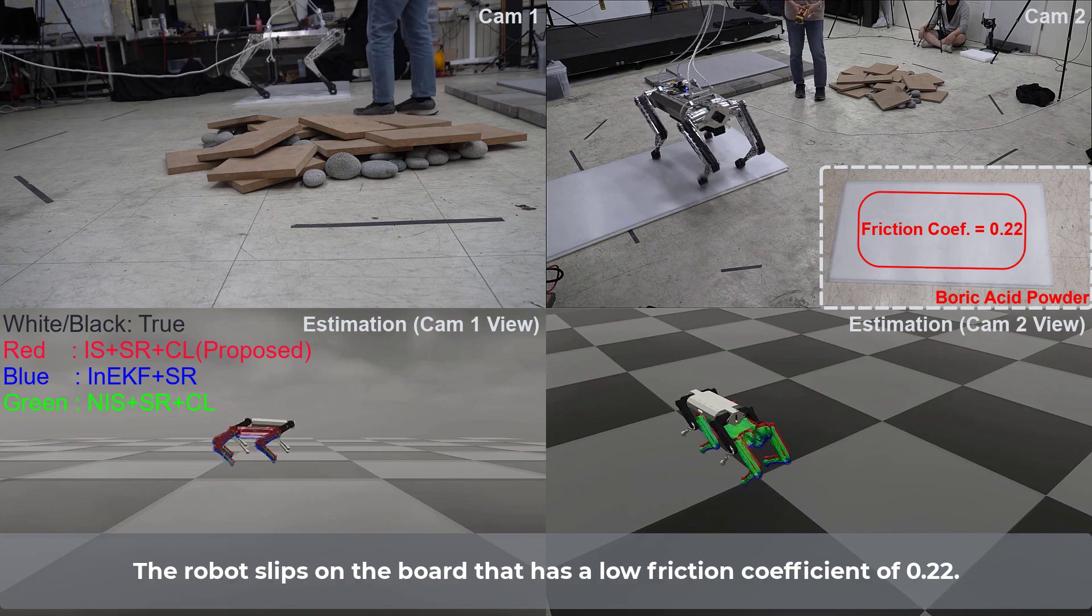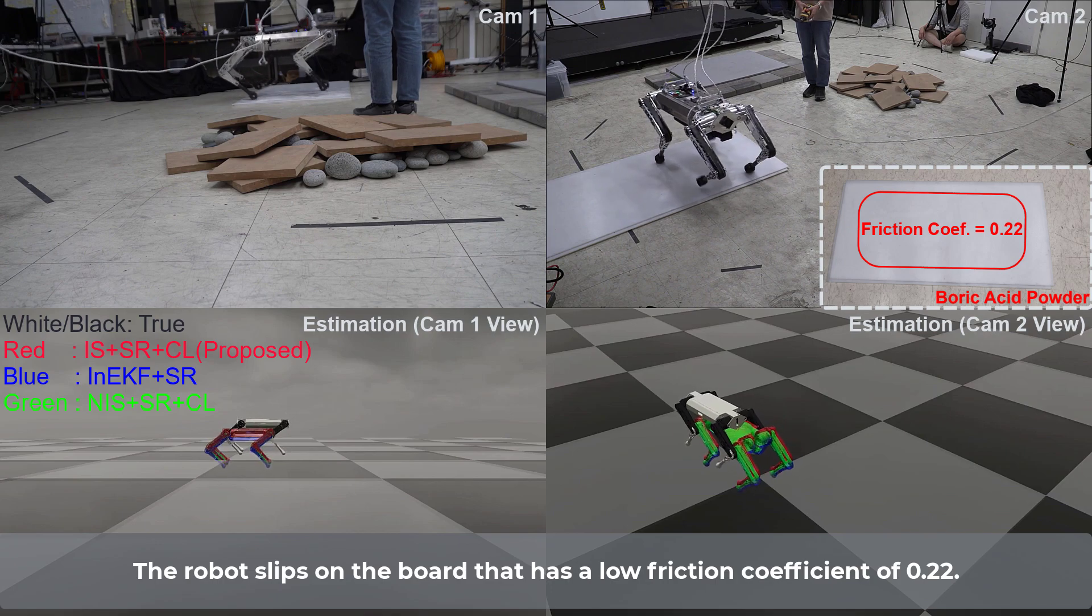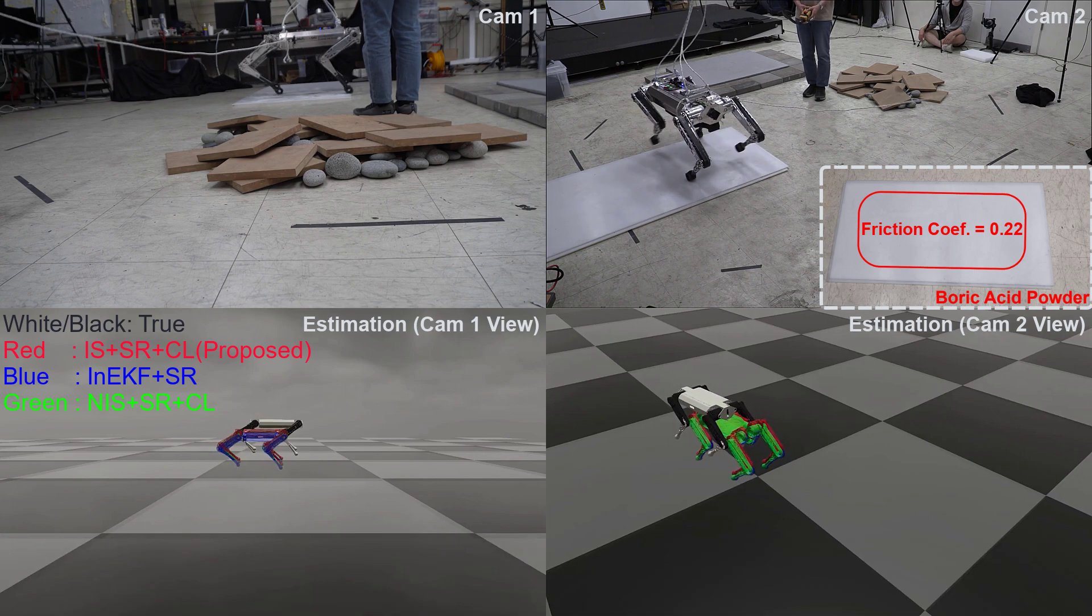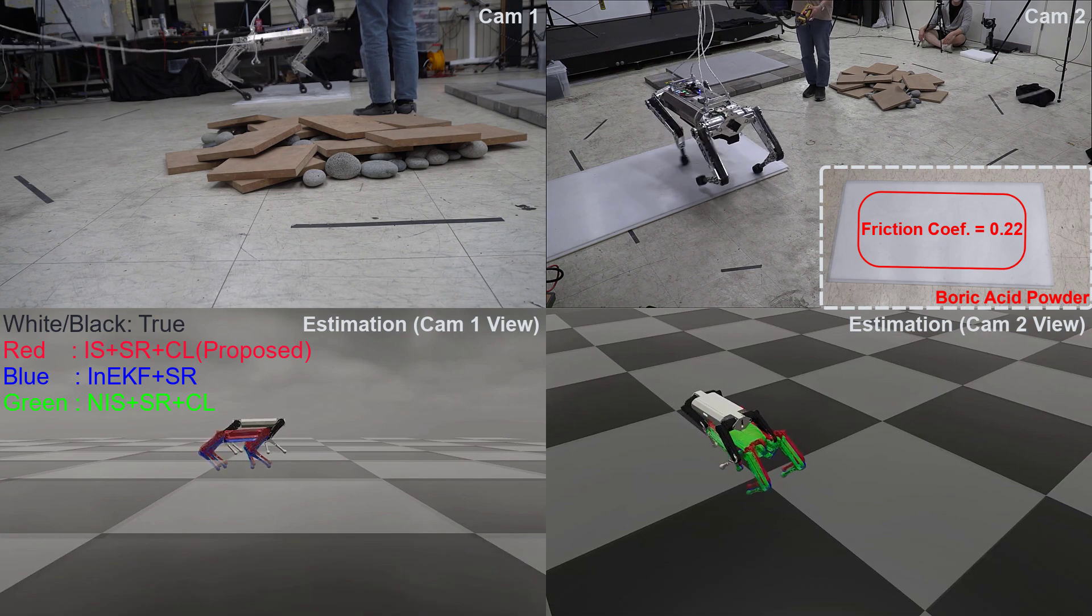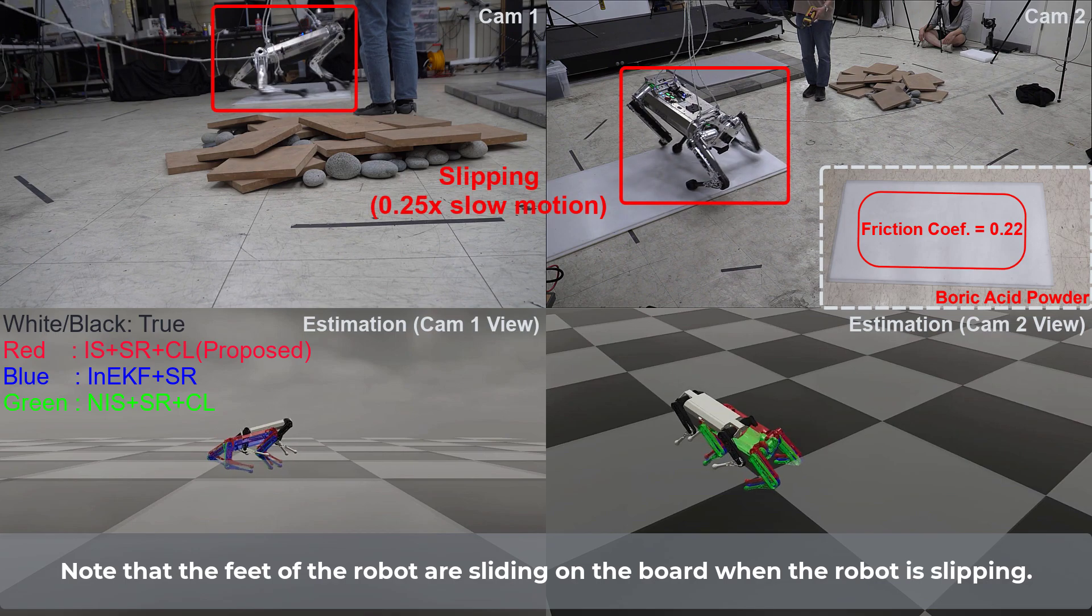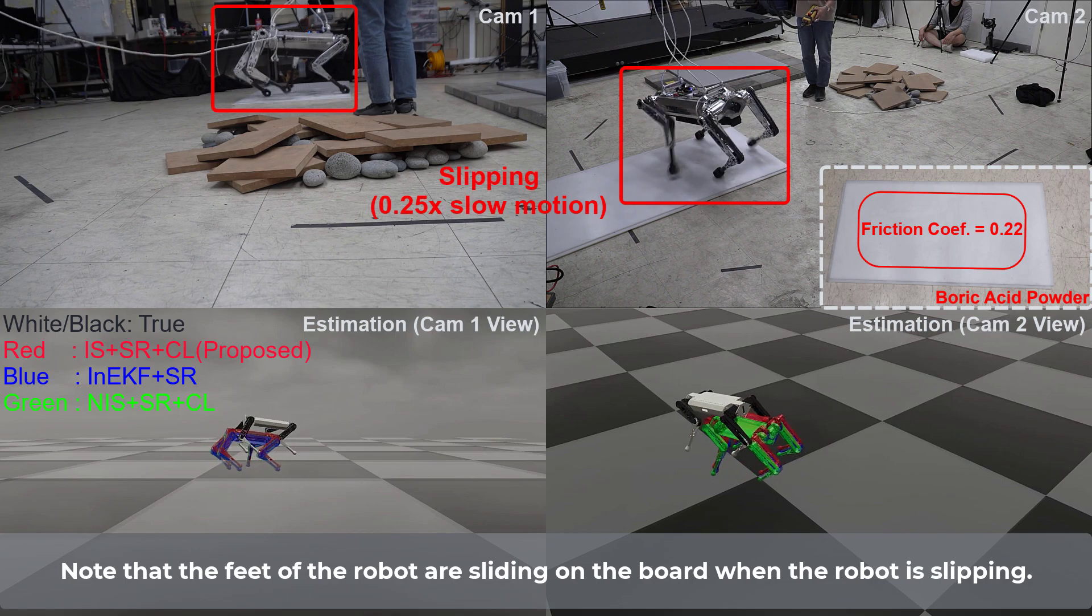The robot slips on the board that has a low friction coefficient of 0.22. Note that the feet of the robot are sliding on the board when the robot is slipping.